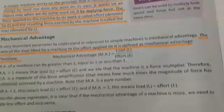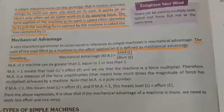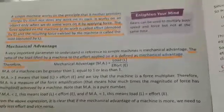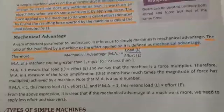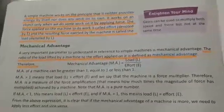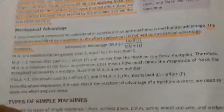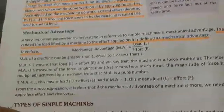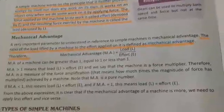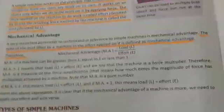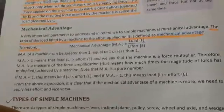A very important parameter to understand in reference to a simple machine is mechanical advantage. The ratio of the load lifted by a machine to the effort applied on it is defined as mechanical advantage. Therefore, mechanical advantage MA equals load L upon effort E. The mechanical advantage of a machine can be greater than one, equal to one, or less than one — there are three possibilities. If MA is greater than one, it means load is greater than effort, and we say the machine is a force multiplier.